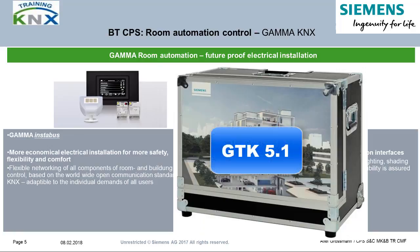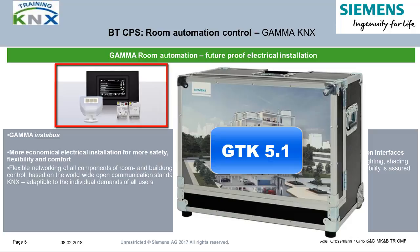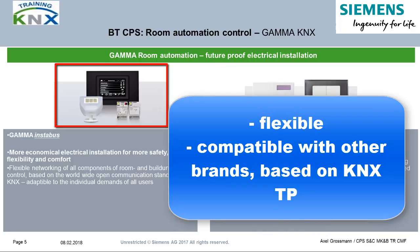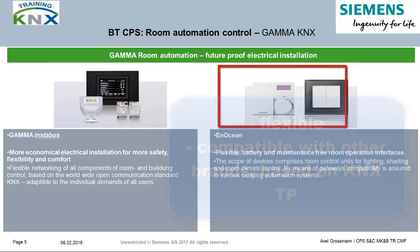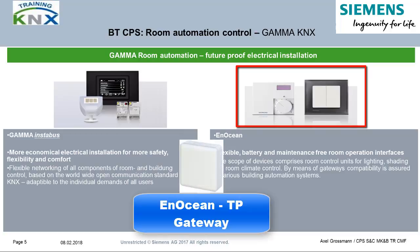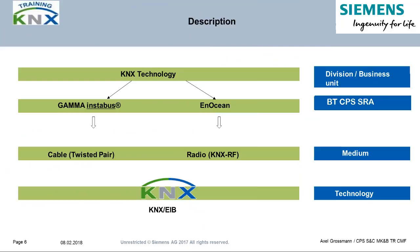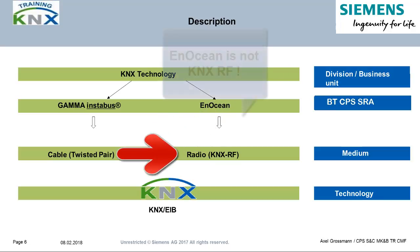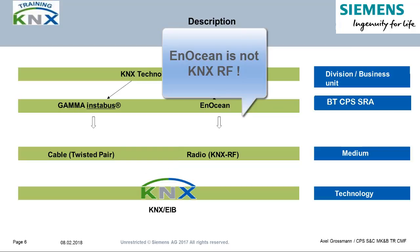The GTK5 training case contains a number of products from the range GAMMA Instabuzz, which is a wire-based version of the worldwide standardized KNX system. With these products you can flexibly install buildings, and KNX-compatible devices from other manufacturers can also be integrated. As a supplement to the wired device range, we offer the Inotion wireless technology, covering operation devices and push buttons which can link up to the KNX twisted pair system via a so-called Inotion to KNX gateway. KNX communication can also take place via radio control, but we currently offer no KNX RF devices.